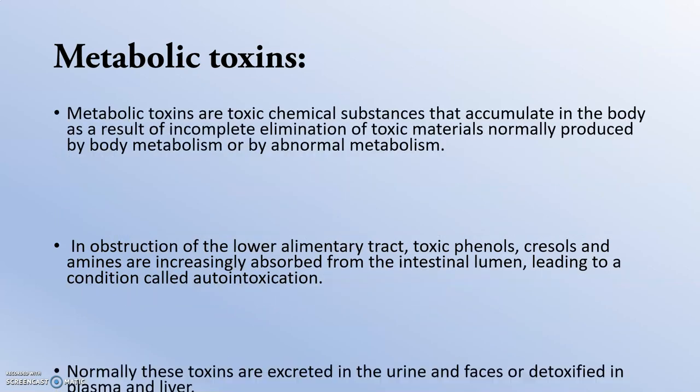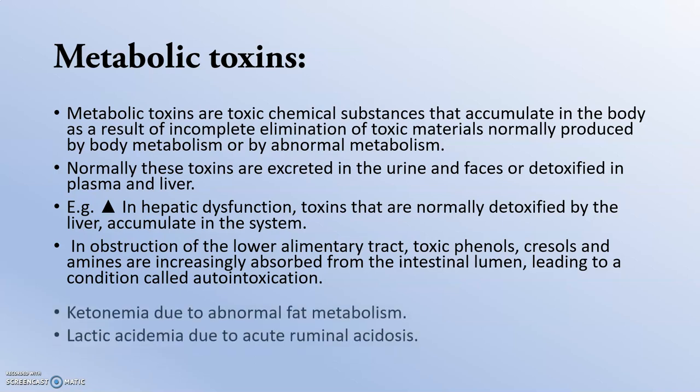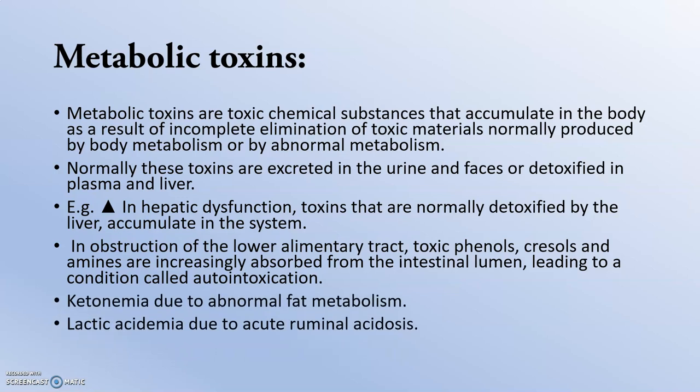Moving to metabolic toxins — these are toxic chemical substances that accumulate in the body as a result of incomplete elimination of toxic material or abnormal metabolism. Normally these toxins are excreted in the urine and feces, or detoxified in the plasma and liver. For example, in hepatic dysfunction, toxins normally detoxified by the liver accumulate in the system. Ketonemia is due to abnormal fat metabolism, and lactic acidemia is due to abnormal ruminal acidosis. Ketone bodies are metabolic toxins in ketosis, and lactic acid produced by abnormal rumen metabolism in acute ruminal acidosis is the metabolic toxin.